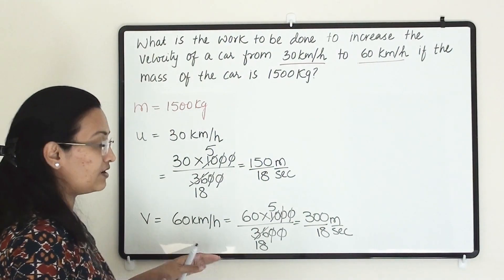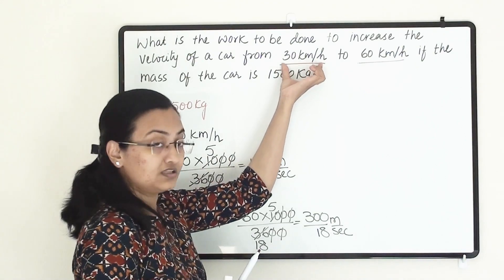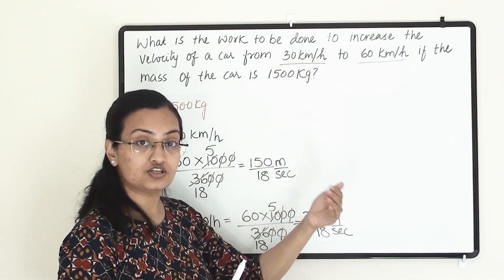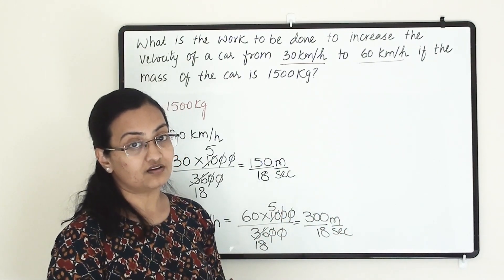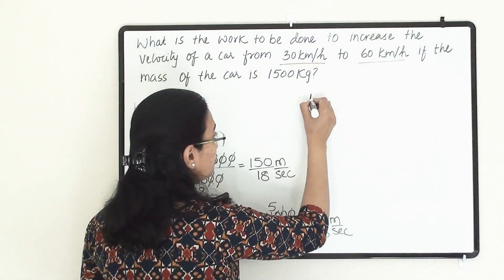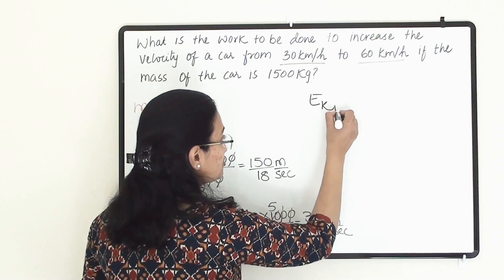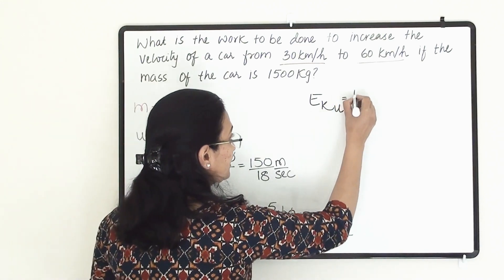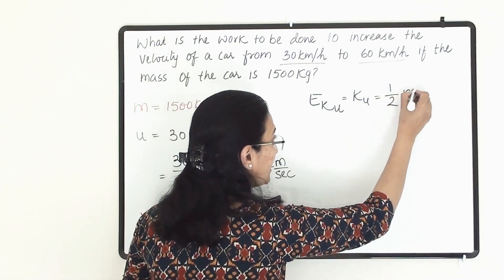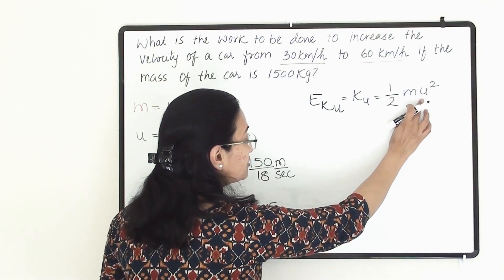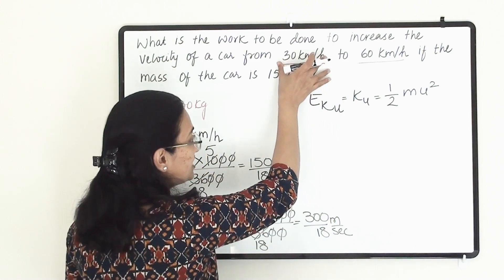Now we have to find out the energy possessed by the object during the initial velocity (30 km/h) and the energy possessed during the final velocity (60 km/h). So we need to find two kinetic energy values: the initial kinetic energy, which we calculate as ½ m u², where u is the initial velocity.